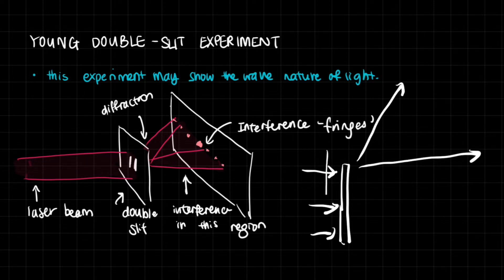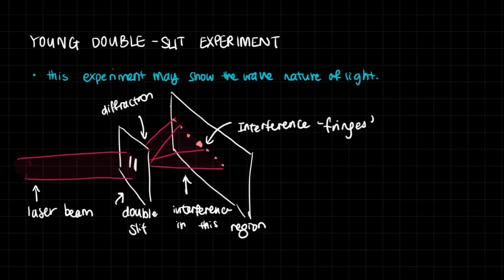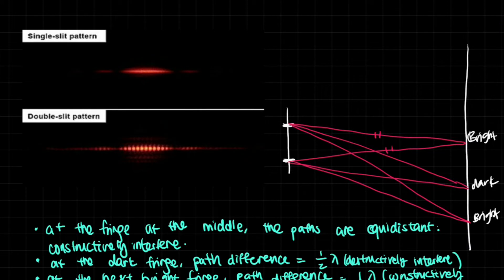The slits were so close to each other that the light from both of them interfered — there was a part where they would intersect. At some points their amplitudes would add up; at other points their amplitudes would cancel. When it hits another cardboard, we see something very fascinating called interference fringes — this peculiar pattern that appears.